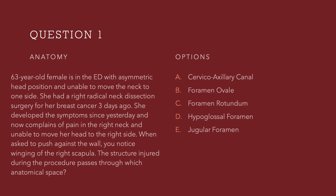The structure injured during the procedure passes through which anatomical space? A 63-year-old female is in the ED with asymmetric head position and unable to move the neck to one side. She has had a right radical neck dissection surgery for her breast cancer 3 days ago. She developed the symptoms since yesterday and now complains of pain in the right neck and unable to move her head to the right side. When you are asked to push against the wall, you notice winging of the right scapula.